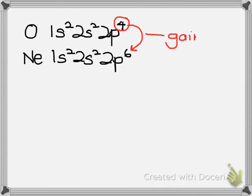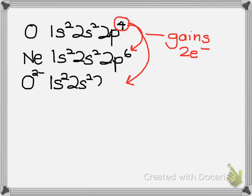So that's what it does. It gains 2 electrons. When oxygen gains 2 electrons, it becomes an oxide ion. So we'd write it as 2 negative. You're a negative ion when you gain electrons because electrons are negative charge. That becomes 1s2 2s2 2p6. So now oxide ion has the same electron configuration as neon.